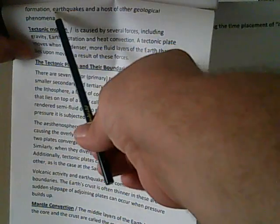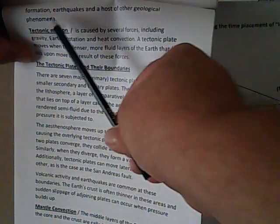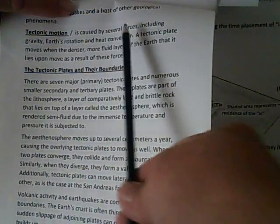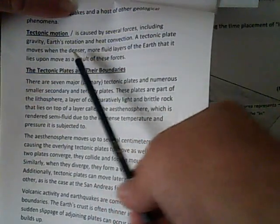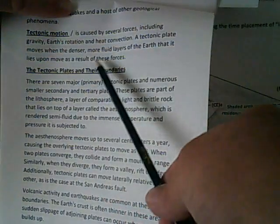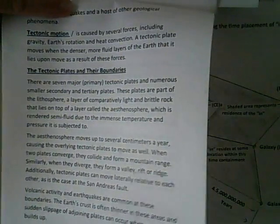When two adjoining plates move relative to each other, this can result in the formation of earthquakes and a host of other geological phenomena — very important to remember that. Tectonic motion is caused by several forces — not just one or two. Several things influence and become factors in the movement of tectonic motion, including gravity — very important that you note gravity — Earth's rotation, and heat convection. A tectonic plate moves when the denser, more fluid layers of the earth that it lies upon move as a result of these forces. I want you to remember gravity — we're going to talk about that.